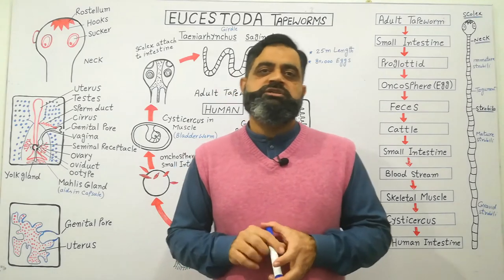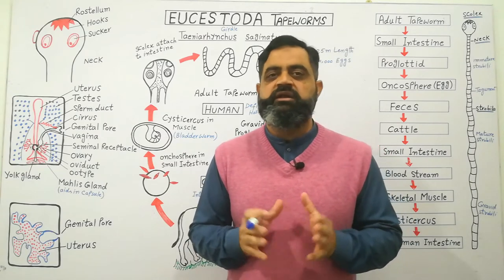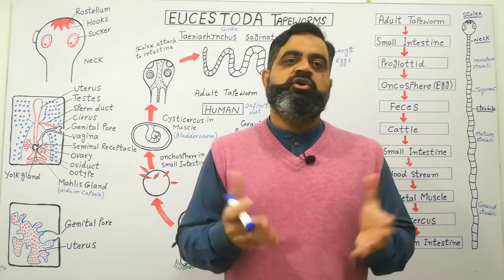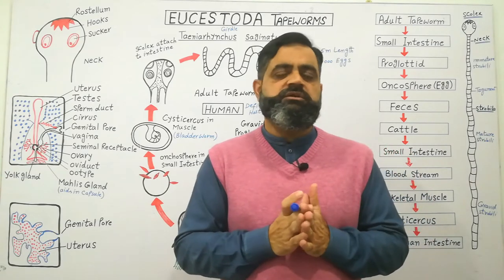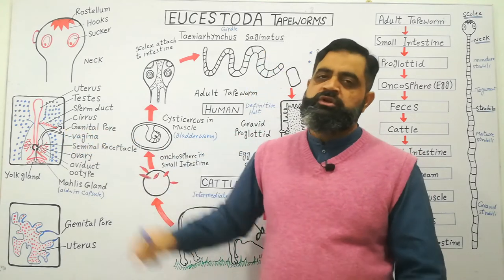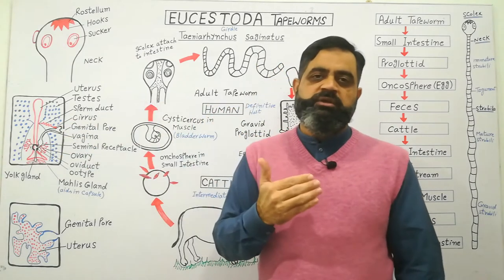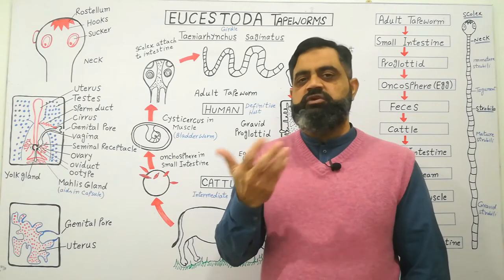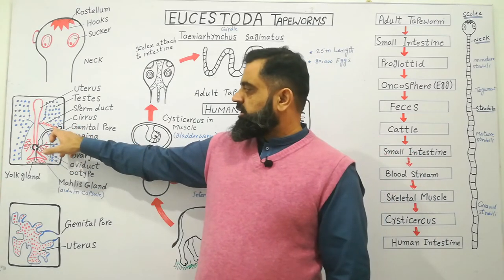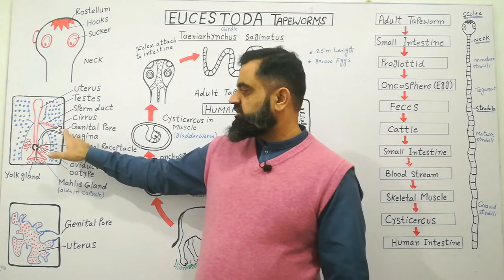Although tapeworms are monoecious and capable of self-fertilization, they typically try to cross-fertilize with each other so that hybrid vigour produces embryos better adapted to diverse parasitic conditions. For cross-fertilization, two tapeworms come close to each other. There is an opening on the surface of the proglottid known as the genital pore. One tapeworm acts as male and the other as female simultaneously, and they switch roles — performing cross-fertilization. The first tapeworm releases sperm via the cirrus into the genital pore of the second tapeworm.